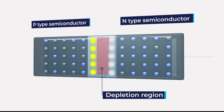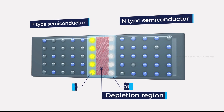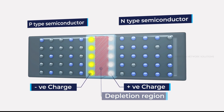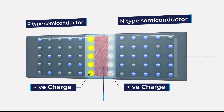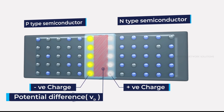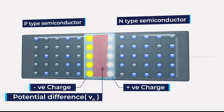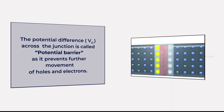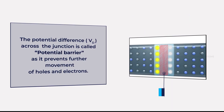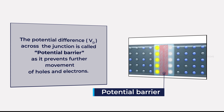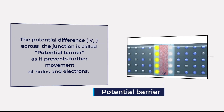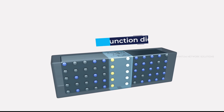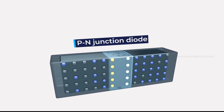Since on either side of the junction J, stationary positive and negative charges exist, there is an electric potential difference of VD between the edges 1 and 2 of D. This potential difference, VD, across the junction is called the potential barrier, as it prevents further movement of holes and electrons. This combination described becomes a PN junction diode.